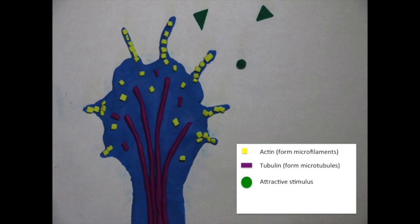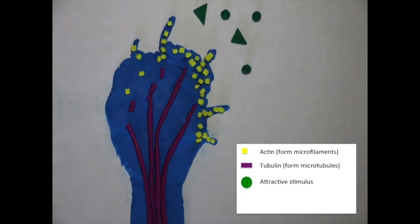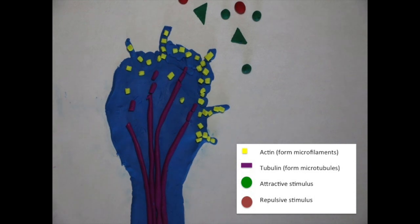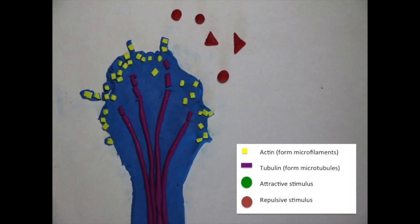Attractant cues cause polymerization of actin and tubulin toward those cues. In contrast, repulsive cues cause both actin and tubulin dimers to depolymerize, which destabilizes the growth cone on the side of the repulsive stimulus.